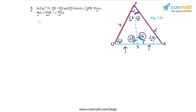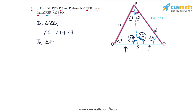Let's apply the exterior angle theorem. In triangle PQS, angle 6 is an exterior angle, so angle 6 equals angle 1 plus angle 3. Similarly, in triangle PSR, angle 5 is an exterior angle, so angle 5 equals angle 2 plus angle 4. So we have: angle 6 = angle 1 + angle 3, and angle 5 = angle 2 + angle 4.